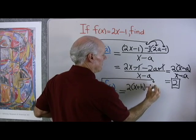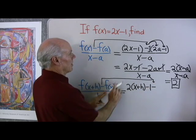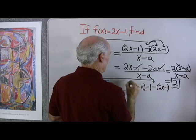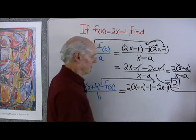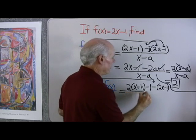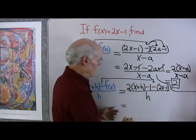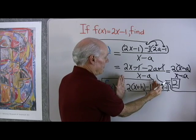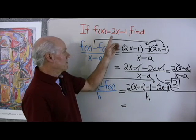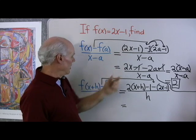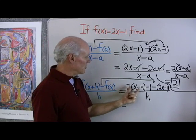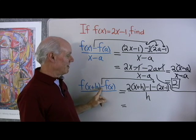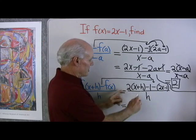Now my subtraction sign, and then I want to subtract off f(x), which is 2x minus 1. I'll put that in parentheses. Let me mark this off so I don't get confused. And that's all divided by h. Now the rest is algebra — that takes care of the function notation. f(x) is 2 times x minus 1; whatever's inside is 2 times that thing minus 1. Then I subtract off f(x).